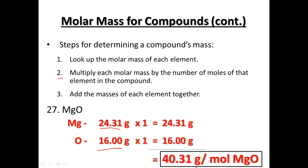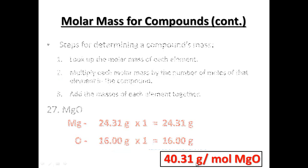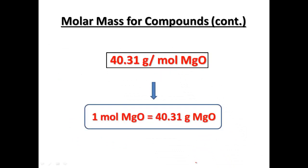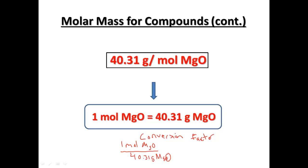The important unit going forward is grams per mole. What we're saying with 40.31 grams per mole is that one mole of magnesium oxide equals 40.31 grams of magnesium oxide. This gives us conversion factors: one mole of MgO over 40.31 grams of MgO, or 40.31 grams of MgO over one mole of MgO.